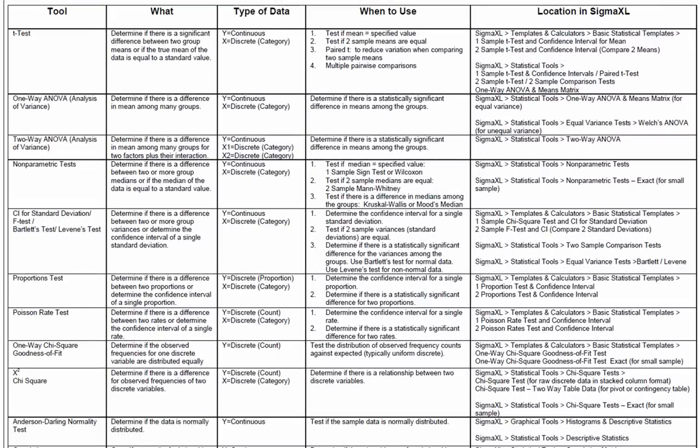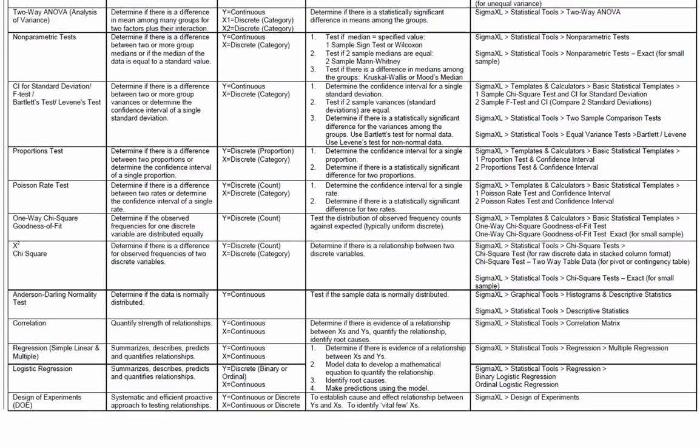SigmaXL's summary of statistical tools are T-tests, one-way ANOVA, two-way ANOVA, non-parametric tests, confidence interval for standard deviation or F-tests, Bartlett's test, Levin's test, proportions test, Poisson rate test, one-way Chi-square goodness of fit test, Chi-square test, Anderson-Darling normality test, correlation, regression, logistic regression, design of experiments.